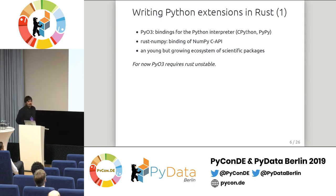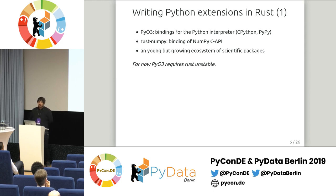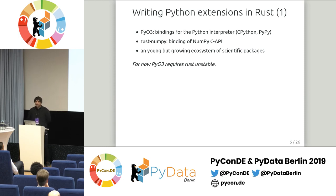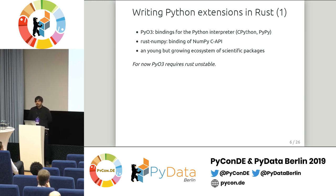Let's talk about writing extensions for Python in Rust. The main project we're going to use is PyO3, which provides bindings to the CPython interpreter — it also works for PyPy. There's also the Rust NumPy project, which provides bindings to the NumPy C API. There is a young but growing ecosystem of scientific packages around this. One small issue is that for now PyO3 requires Rust unstable, so you cannot use it on the stable branch, which is not ideal for production systems.